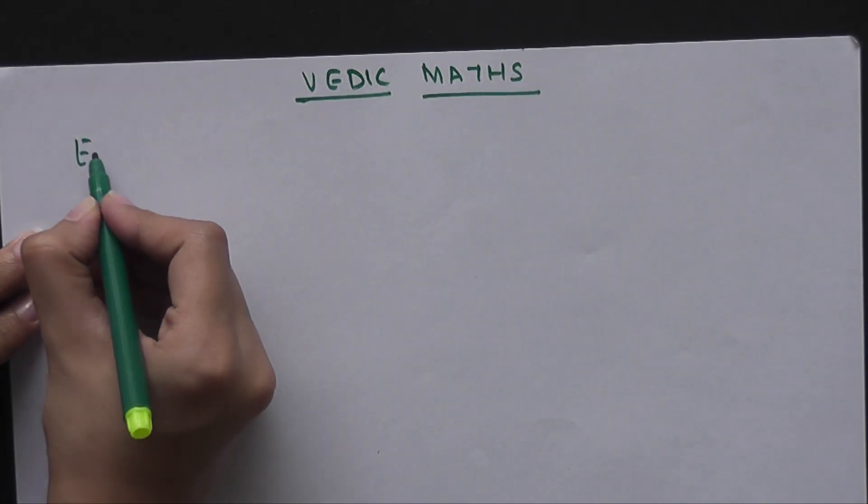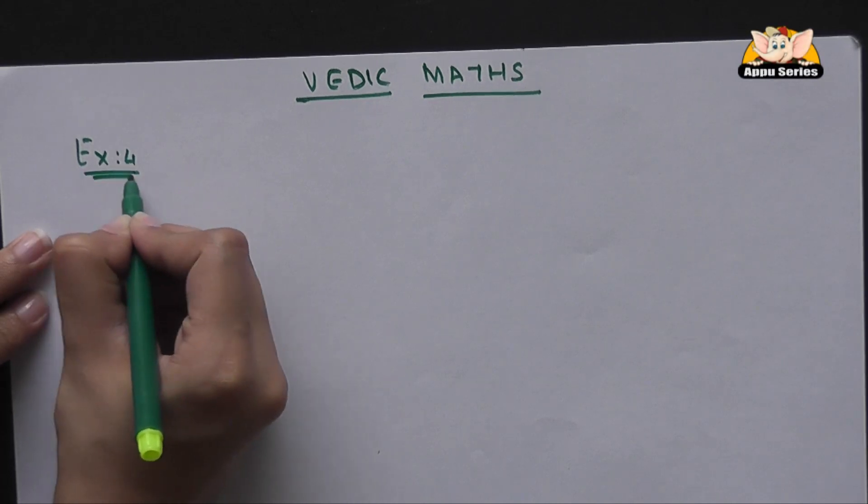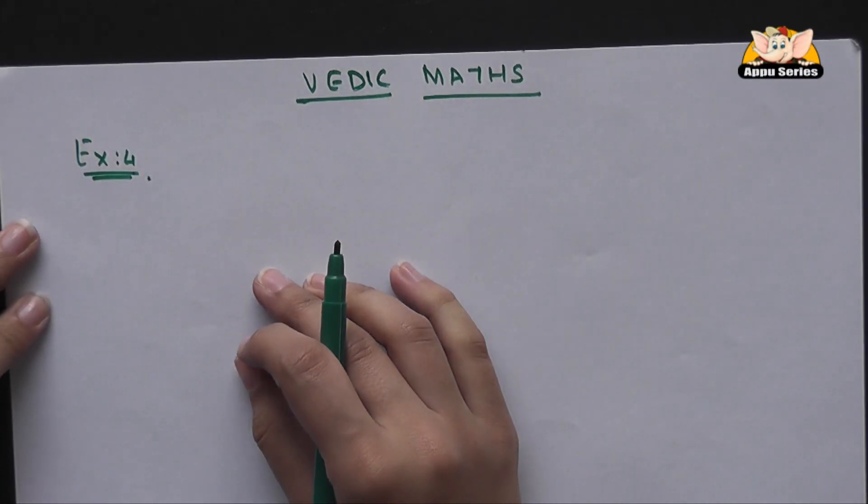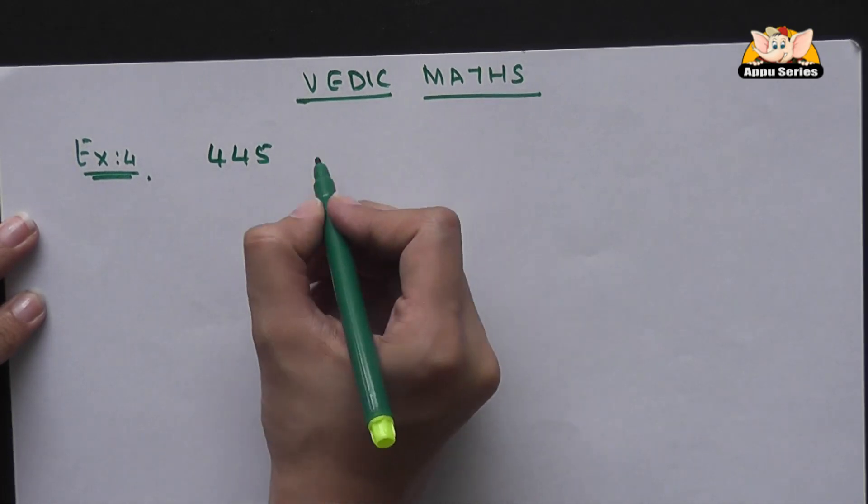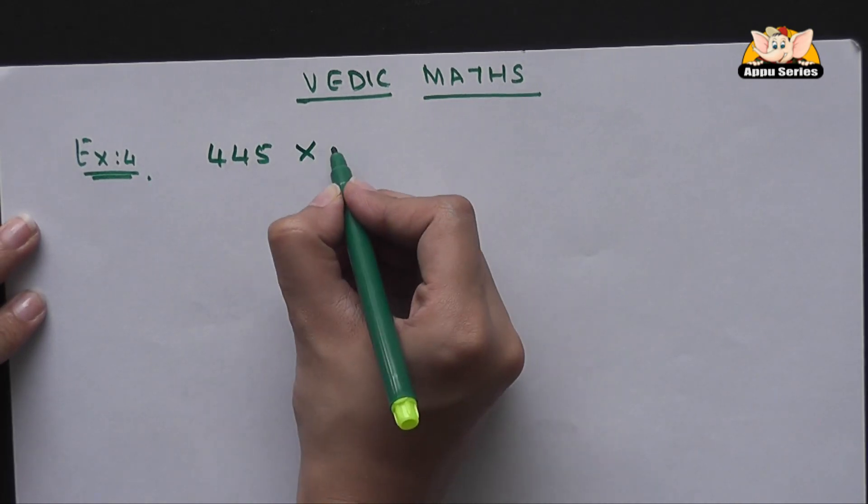Hi! In this series of multiplication with Vedic Maths, I'll show you another example. Let's take a difficult problem, say 445 into 243.